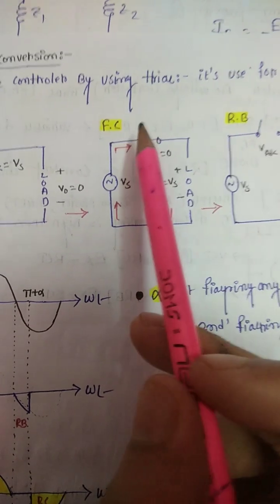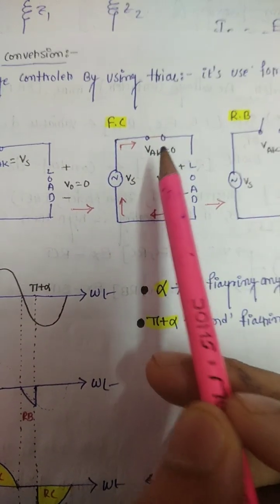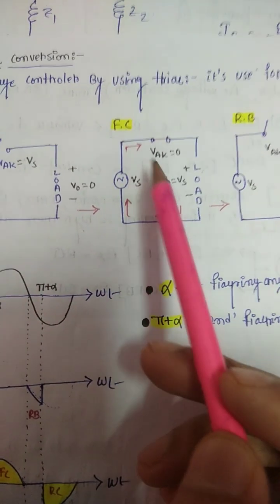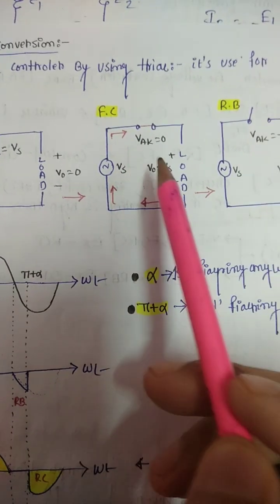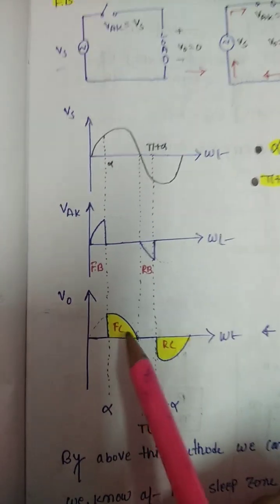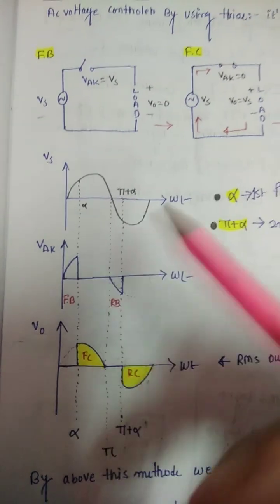Next is the forward conduction mode. When in forward conduction mode, PAK will be zero. The thyristor voltage across is zero, which means the output voltage will be present. In case of reverse voltage, the reverse blocking mode is also available.